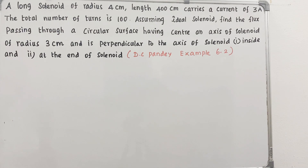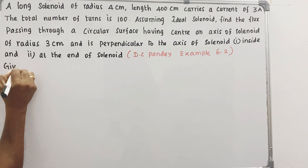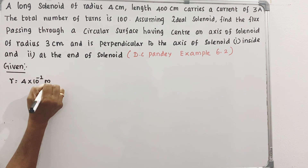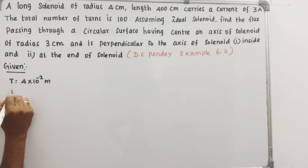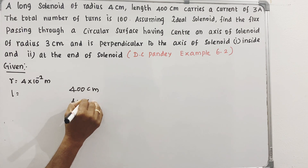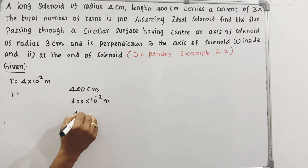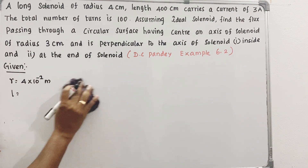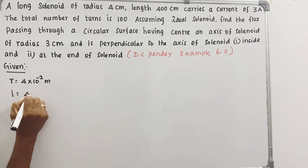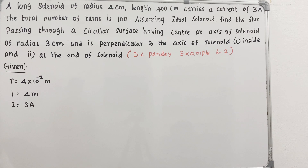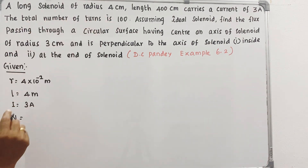Now let's see: a solenoid of radius 4 centimeters — that is 4 × 10⁻² meters — and length 400 centimeters, which is 4 meters. It carries a current of 3 A. The total number of turns N = 100. Small n is the number of turns per unit length.